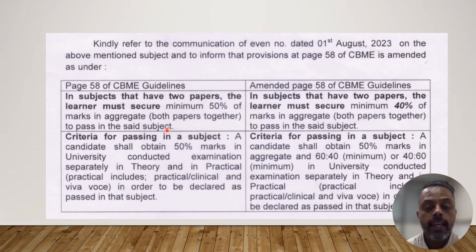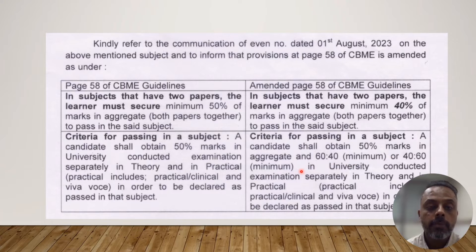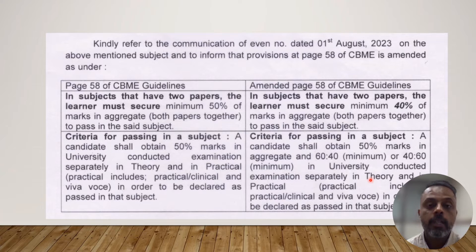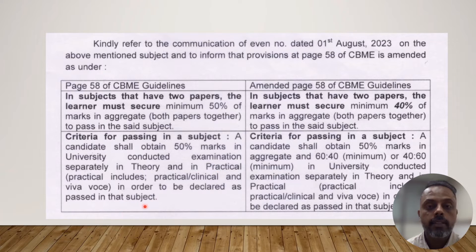That was regarding the theory. Now, what is the criteria to pass a subject? As per the new rule, a candidate shall obtain 50% marks in aggregate and a minimum of 60-40 or 40-60 in the university-conducted examination separately in theory as well as in the practical. Practical here includes practical, viva, and clinical. Previously, we were following 50% marks in the university-conducted examination separately in theory as well as practical.